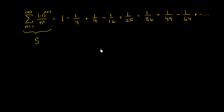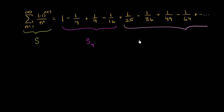Let's estimate by taking the partial sum of the first four terms. We'll call that s sub four, and then you're going to have a remainder, which is going to be everything else — all the other stuff. That's your remainder, the remainder to get to your actual sum, whatever's left over when you just take the first four terms. This is from the fifth term all the way to infinity. So the actual sum equals this partial sum plus this remainder.